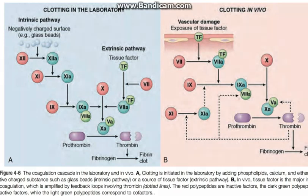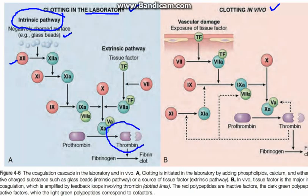The coagulation pathway studied in the laboratory is different from what occurs in vivo. In the laboratory, the intrinsic pathway is mainly used — glass beads and calcium are added to activate factor XII first, and then each proenzyme is converted into an enzyme in sequence until the fibrin clot is formed.